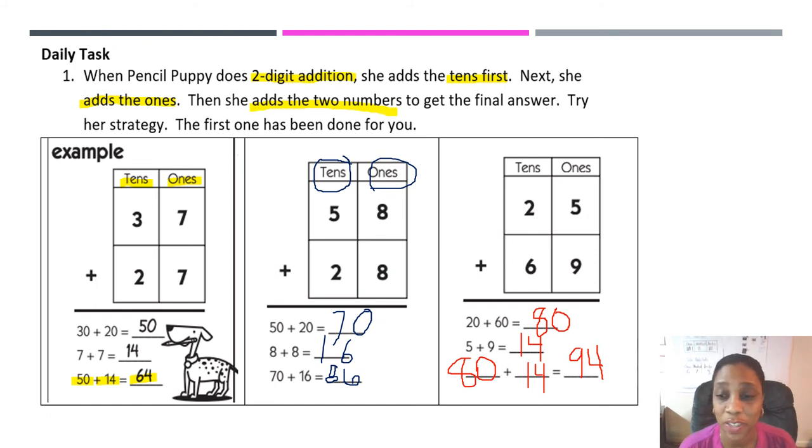All right. Did you give yourself some time to figure it out? I know you did. So let's see what the answer is. Remember, just like Pencil Puppy, we add the tens first, then we add the ones, then we add the sum of those two problems together.